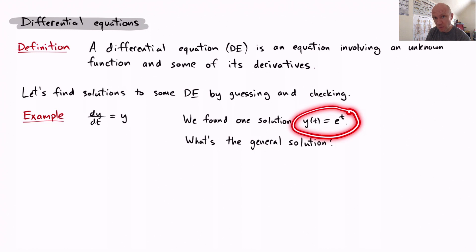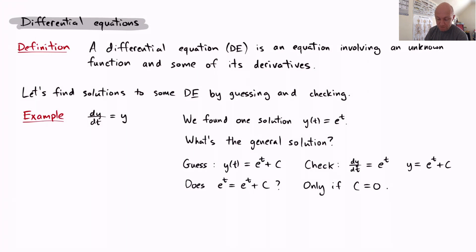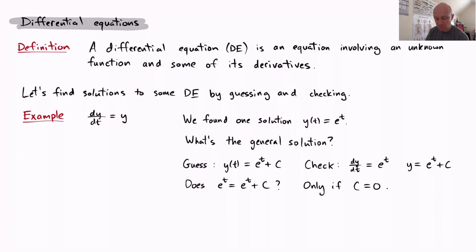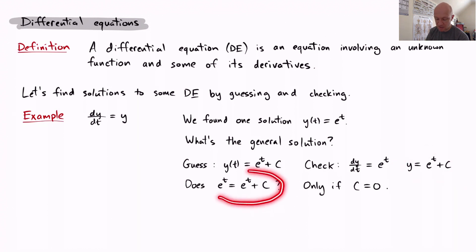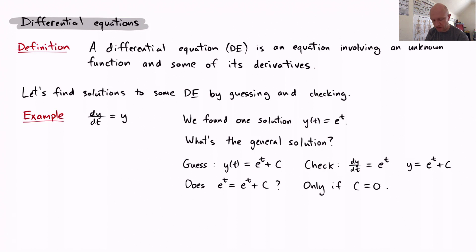We found our solution y of t equals e to the t. Are there more solutions? What is the general solution — the infinite family of solutions? We might guess e to the t plus c. Let's check: dy/dt equals e to the t, but y of t equals e to the t plus c. Is e to the t equal to e to the t plus c? No, not generally — not unless c equals zero, which just gives us the solution we already found. So that is not the general family; it's not like the previous example where we simply add plus c.